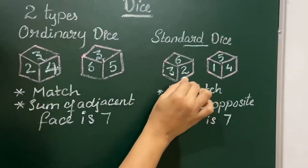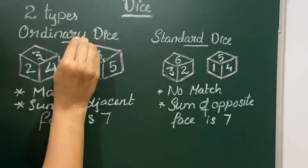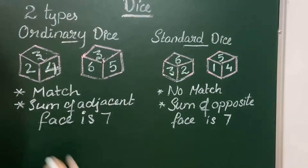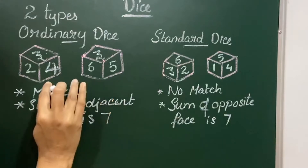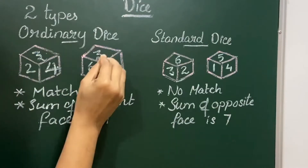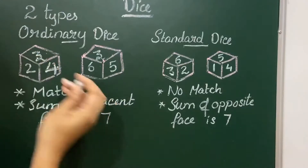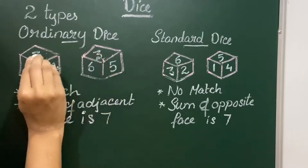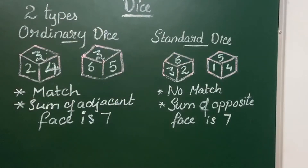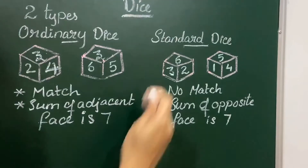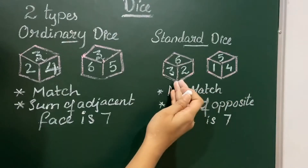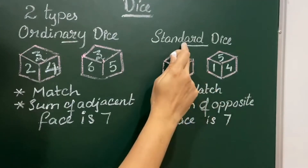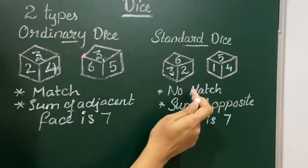What is ordinary dice and what is standard dice? Ordinary dice is a dice in which you can see a match of numbers between the dice — there will be a match of one number or more than one number. For example, if 3 exists on both dice at the top face, that is a match, so it is ordinary dice. If there is no match and all numbers are different, then it is standard dice.